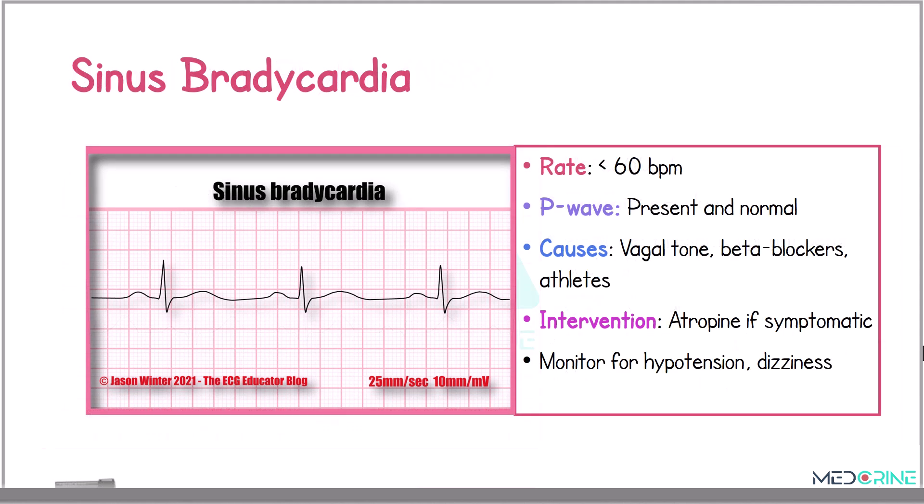The second rhythm is a sinus bradycardia. A sinus bradycardia rhythm presents with a heart rate below 60 beats per minute. While this can be normal in athletes, it may also result from medications or vagal stimulation. If it is symptomatic, treatment includes atropine administration, and you need to monitor for hypotension and dizziness.